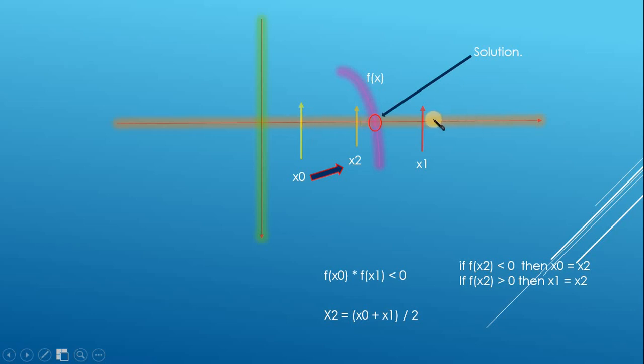Like here, the range is from x0 to x1. This is our range. And then we are going to just find the middle point of this range.